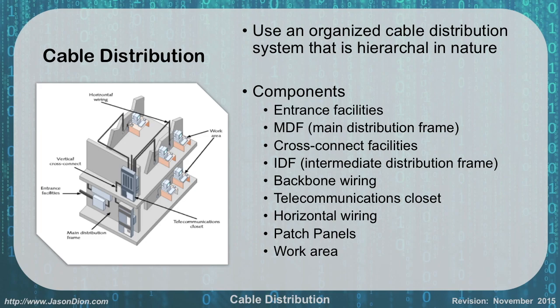The components entail our entrance facilities. Our entrance facilities is where the cable enters your building from your telecommunications service provider — that can be Comcast or Verizon or any of the other telecom providers. Where it comes into your building is usually going to be your main distribution frame, which will be your telecom closet, usually on your main floor, where the service comes in and is then switched to all of the other intermediary frames, such as the second floor.